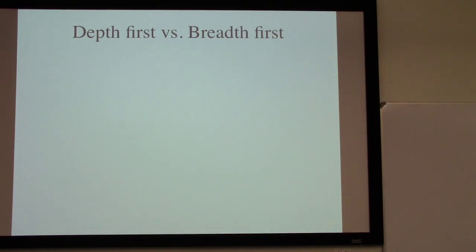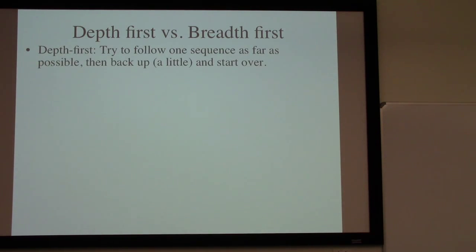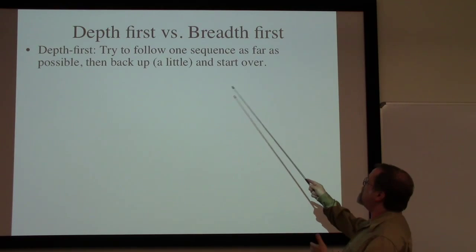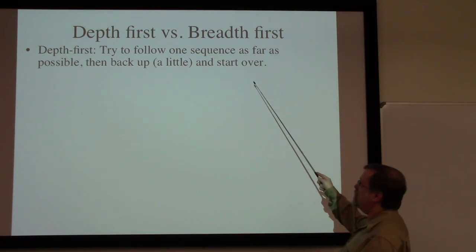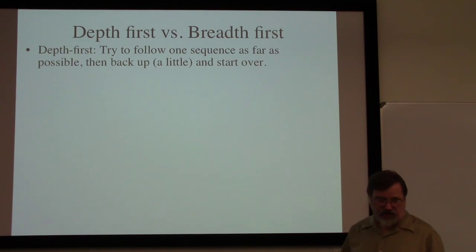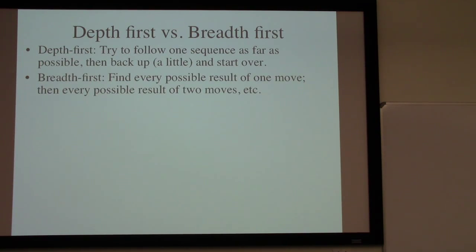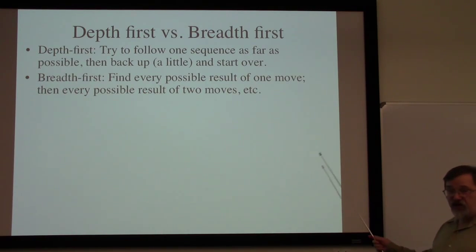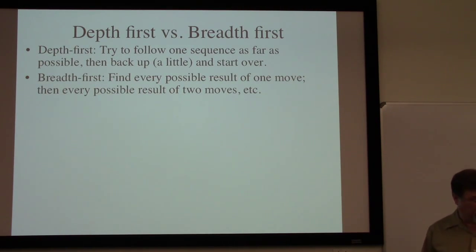There are two fundamentally different ways of constructing game trees. One — the most natural for someone just trying to solve puzzles — is what we refer to as a depth-first search. We try some particular way to solve a puzzle and follow one sequence of moves as far as possible. Then maybe we realize we ran into a dead end and back up to start over from someplace. The other possibility is what we refer to as a breadth-first search. Instead of following one particular sequence, we find every result of what would happen after one move, then every possible result after two moves, after three moves, et cetera.